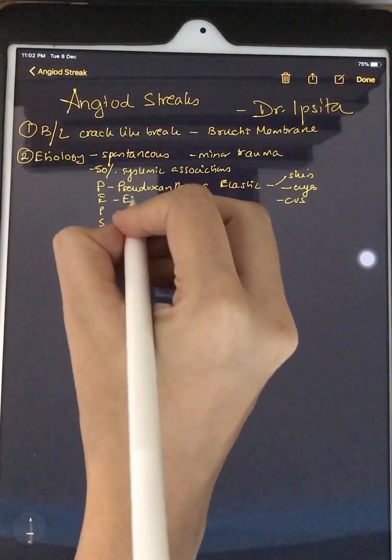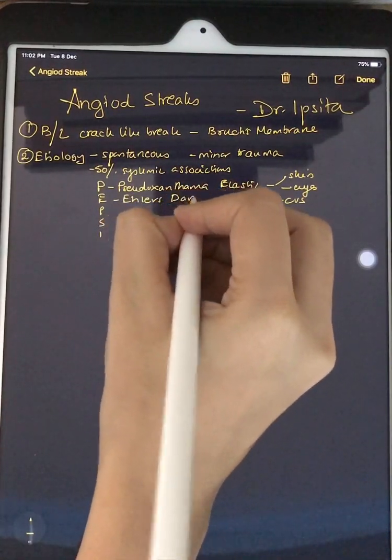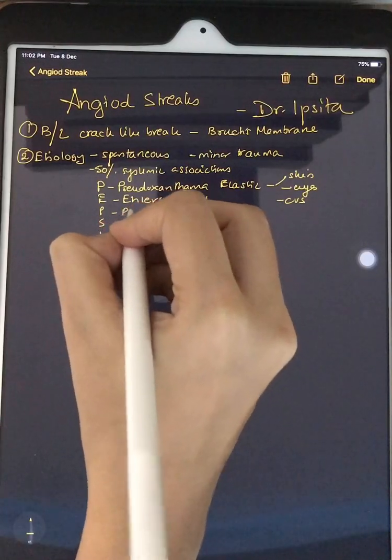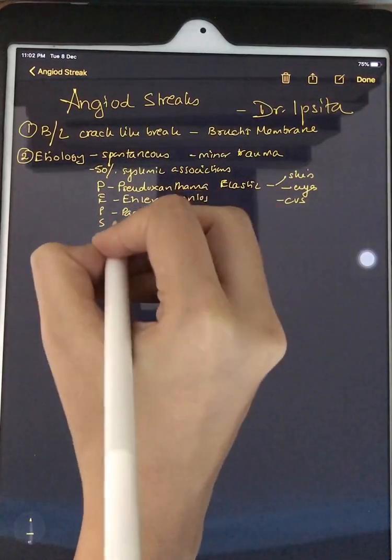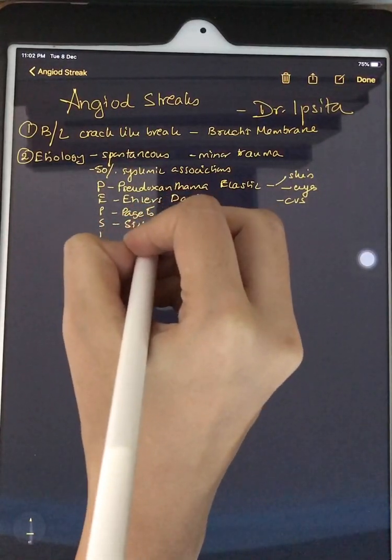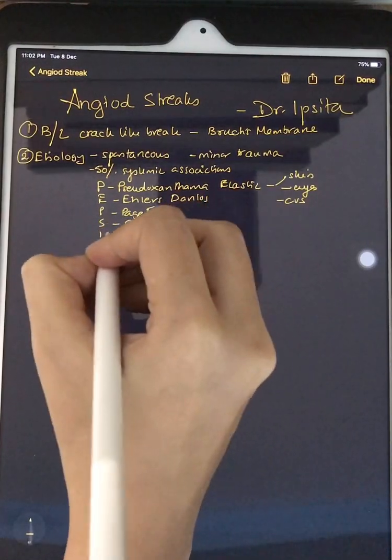E stands for Ehlers-Danlos. The other P stands for Paget's. S is sickle cell disease and I is idiopathic.